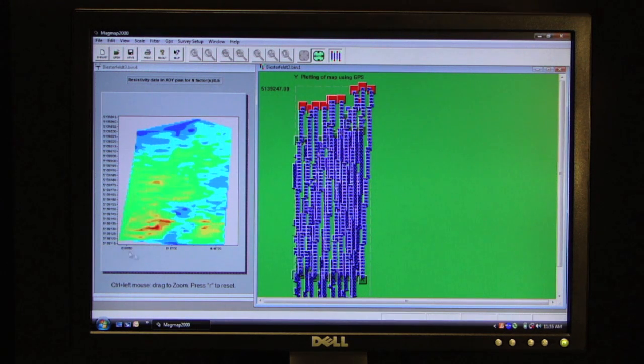So this is a horizontal map at a given depth, in this case to approximately one meter depth of investigation of all of the survey lines in this area.